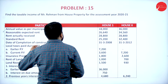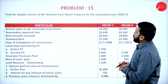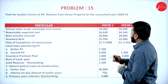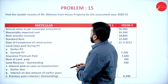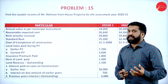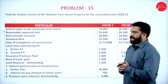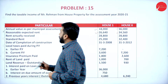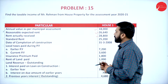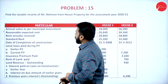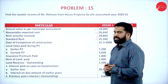You have house 1 as well as house 2. Annual value as per municipal assessment is 18,000 and 36,000. Reasonable expected rent — that is fair rent — is 26,640 and 34,560. Rent actually received is 28,800. Standard rent is 25,200 and 32,400.